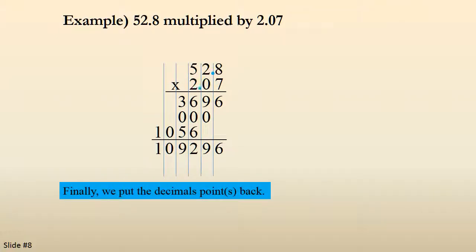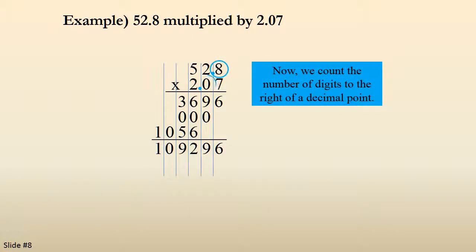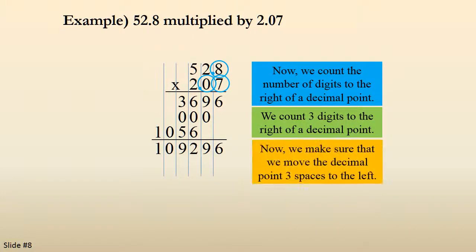Now we're going to put the decimal points back in and we count the number of digits to the right of a decimal point. The 8, the 0, and the 7 are to the right of a decimal point. So I count 3 digits to the right of a decimal point.